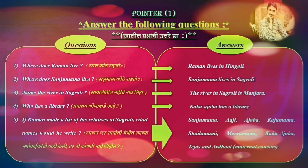Third question: Name the river in Sagruli. Sagruli til nadiche Naav liha. Answer: The river in Sagruli is Manzra. Fourth question: Who has a library? Granthalai Kona Kadhe Ahe. Answer: Kaka Azoba has a library.